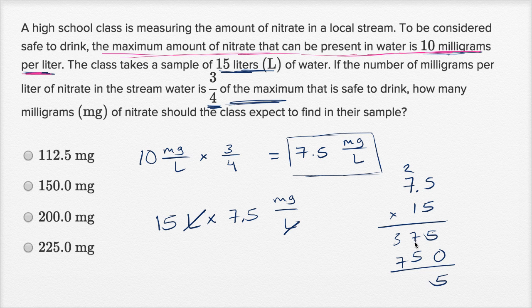And then 1 times 75 is 75. So let's see, 5 plus 0 is 5, 7 plus 5 is 12, and then 4 plus 7 is 11. And you have one digit behind the decimal point. So they would expect to find 112.5 milligrams. And there we go.